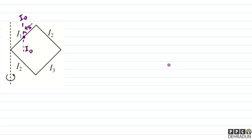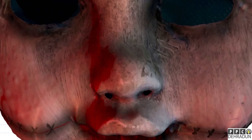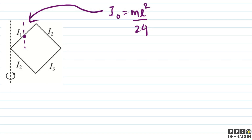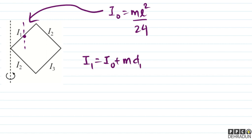जिस तरीके से I₀ पहले वाले rod के लिए है, उसी तरीके से बाकी सारे rods के लिए भी I₀ की value ML²/24 आएगी। अब पहली rod का moment of inertia about the required axis: I₁ = I₀ + M·D₁²।